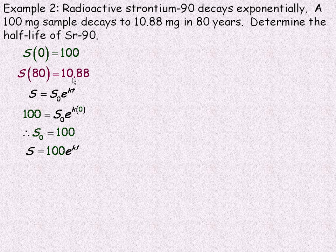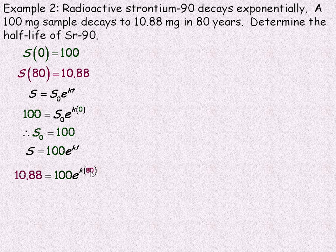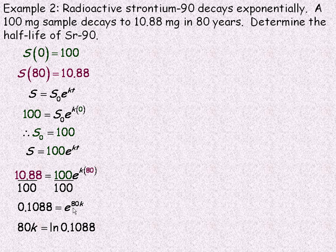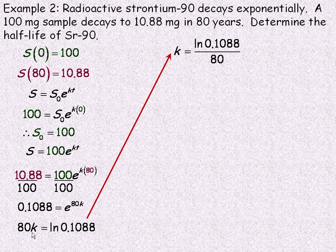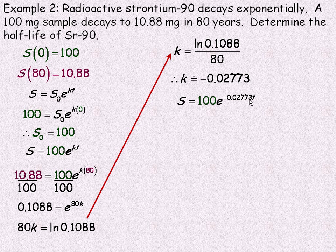We use s(80) = 10.88 to find k. Substituting: 10.88 = 100 · e^(80k). Dividing by 100 gives 0.1088 = e^(80k). Converting to logarithmic form: 80k = ln(0.1088). Dividing by 80, k = ln(0.1088) / 80 ≈ −0.02773. Filling that into our formula: s(t) = 100 · e^(−0.02773t).